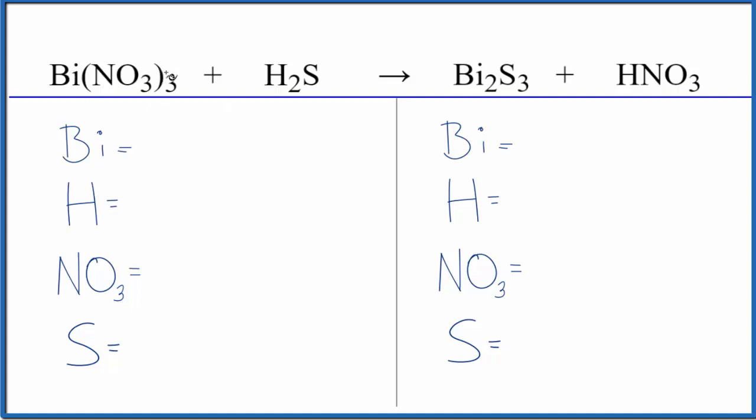So when we look at this, it looks like the bismuth and the hydrogen, they're changing places. The bismuth starts with the nitrate, but now we have the sulfur there, so we have bismuth sulfide here. The hydrogen and the nitrate, now they're together over here. So this is a double displacement reaction. That's the type of reaction.